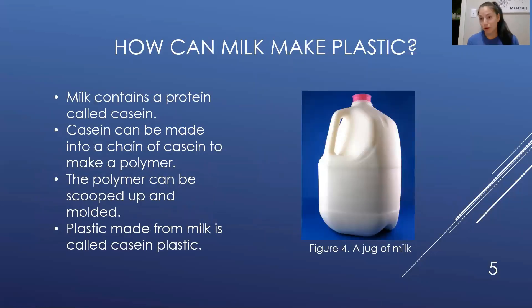So the question you've been wondering up to this point is how can milk make plastic? Well, you're about to find out. Milk contains a protein called casein, and casein can be made into a chain much like in the last picture you saw to make a polymer. The polymer can be scooped up and molded, which we will do today. The plastic made from milk is called casein plastic. So if you want to look up what milk plastic can be used for, casein plastic might be a term that you use or maybe a more common term that you'll see whenever you make your search.